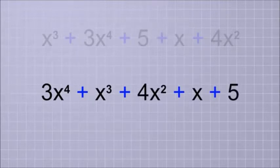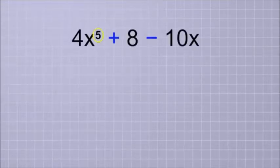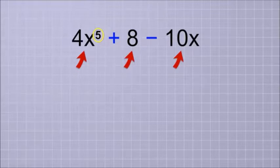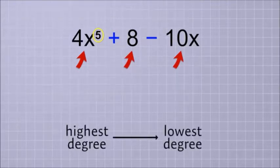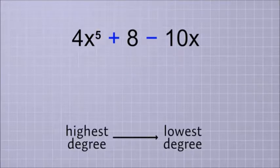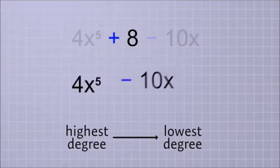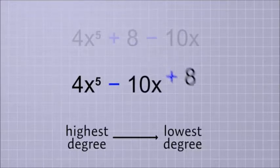But of course, not every polynomial has a term of every degree. This is a 5th degree polynomial, but it only has 3 terms. We should still put them in order from the highest to the lowest, even though it has terms that are missing. So, the 4x to the 5th should come first, and then the minus 10x, and finally the plus 8.